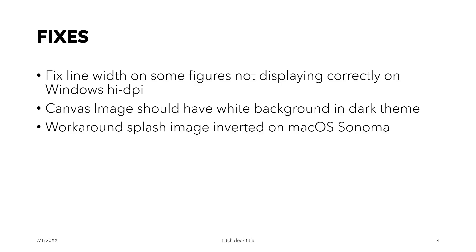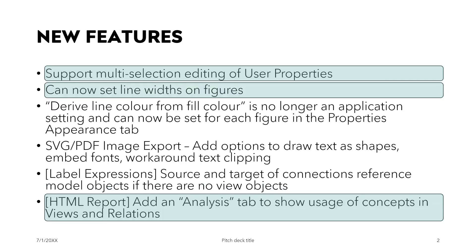There are also three fixes: the line width on some figures, canvas image sizing, and if you use macOS there's a splash image invert issue on certain versions like Sonoma — there is now a workaround for that. After all, I feel 5.2 is a version worth upgrading to when you and your team are ready. Thank you for watching — see you there!